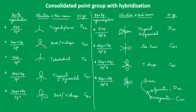Whether it is a bent shape, two lone pairs, one lone pair, or a seesaw shape — if one or two bonds are attached in a symmetrical way, it won't affect the base structure and the same point group is retained. If two lone pairs are present in SP3D, the structure becomes T-shaped, and T-shaped gives C2V only.